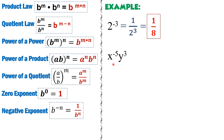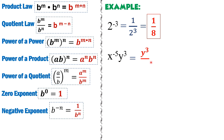What if we have x raised to negative 5 times y raised to 3? The only negative exponent is on x, while y's exponent is positive. So we get the reciprocal of x only — x moves to the denominator — while y stays in the numerator. Multiplying 1 and y cubed gives y cubed in the numerator and x raised to 5 in the denominator. So the answer is y cubed over x raised to 5.